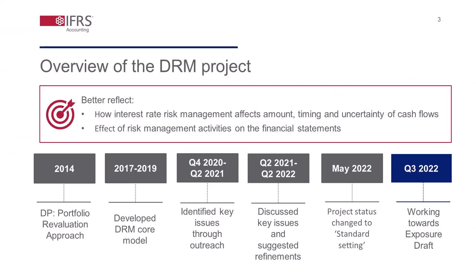As you may know, the Dynamic Risk Management project has a long history. When the IASB published the new Hedge Accounting chapter in IFRS 9, an accounting policy choice to continue with the requirements of IAS 39 was included, and the intention was to keep this choice until the project on Dynamic Risk Management was completed. The objective of the IASB is to better reflect in financial reporting how interest rate risk management affects amount, timing, and uncertainty of cash flows.